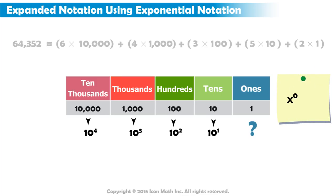Any number set to the power of 0 equals 1. So we can write 1 as 10 to the power of 0.